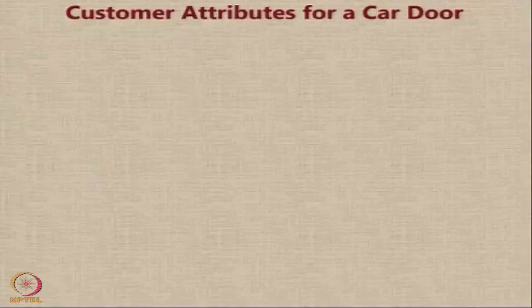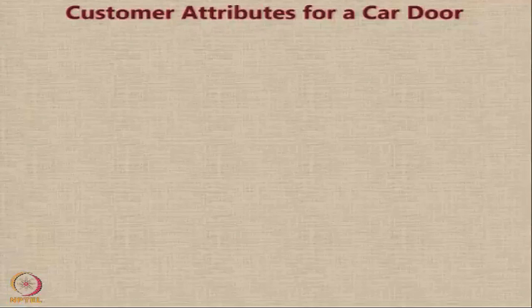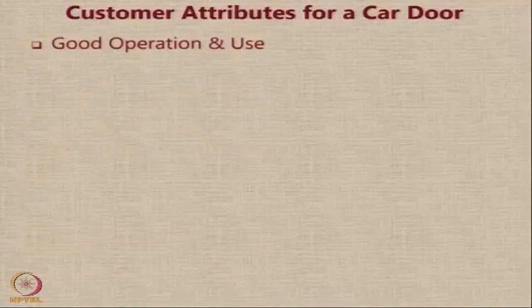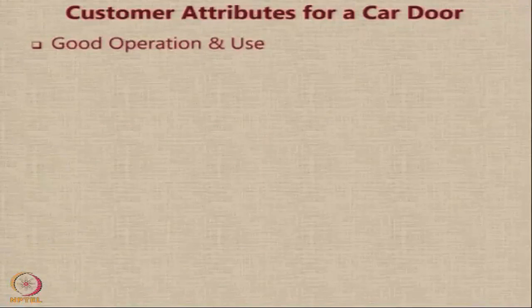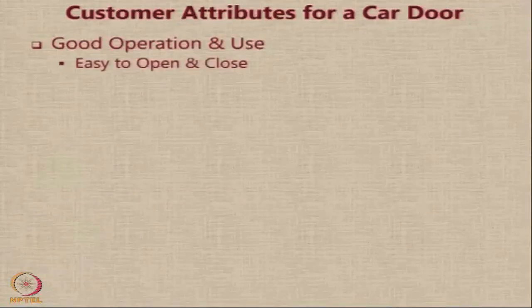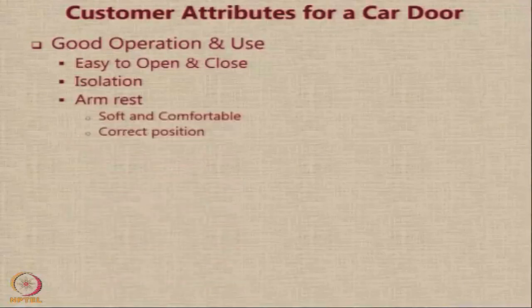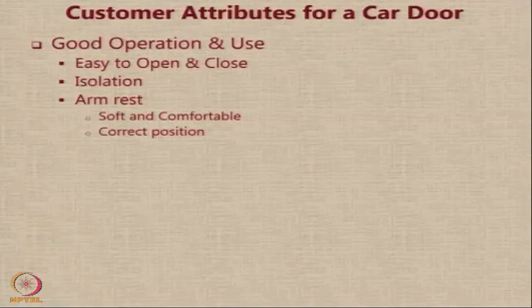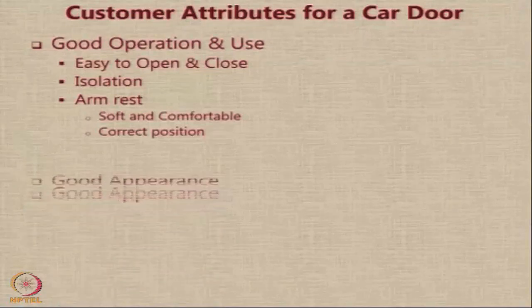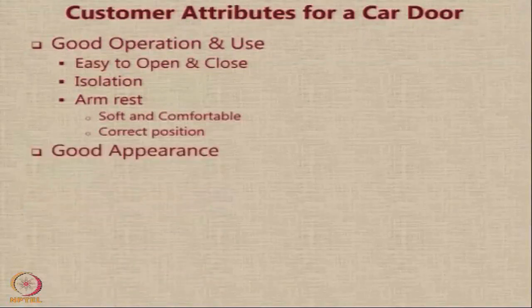We can go deeper and look at one component of the car — the door — and examine its customer attributes. Good operation and use could be one: it should be easy to open and close. It should provide isolation to the people sitting inside from the atmosphere outside. It should have an armrest that is soft and comfortable, and at the correct position — not too high or too low. Good appearance of the door is also important for many customers.